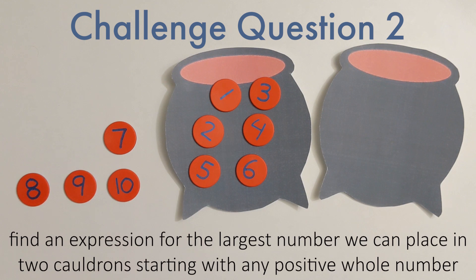The goal is, using these new rules, what's the largest number we can place without causing either cauldron to explode? If you can answer that, try once again to start with 2 and see what's the largest number you can place, and 3, etc. Try to determine what's the largest number you could place, starting with any whole number.